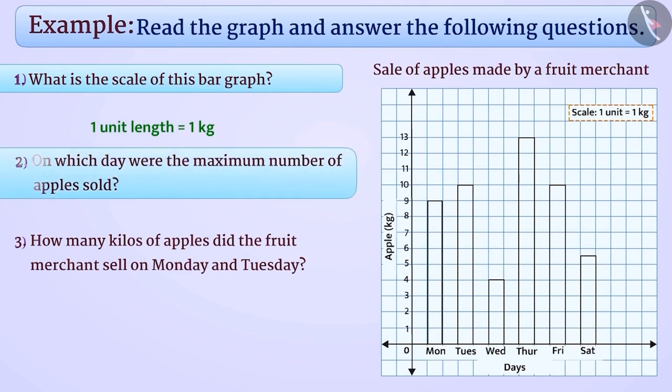Question 2: On which day were the maximum number of apples sold? In the given bar graph, we observe that the bar on Thursday is the longest. So, we can conclude that the highest sale of apples were made on Thursday.